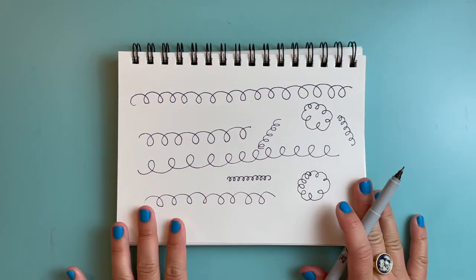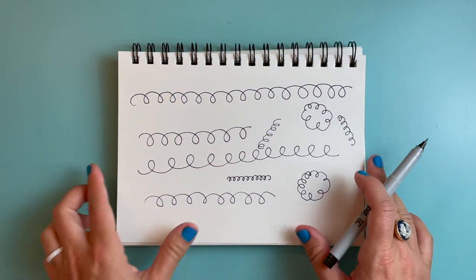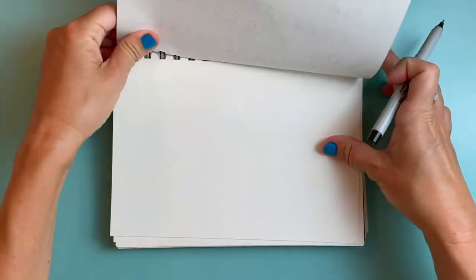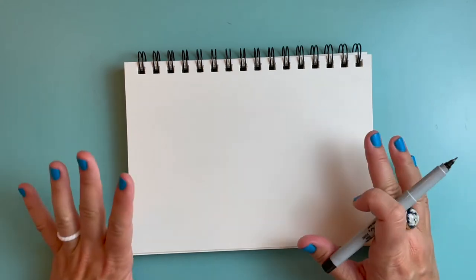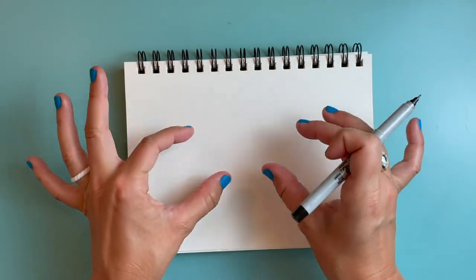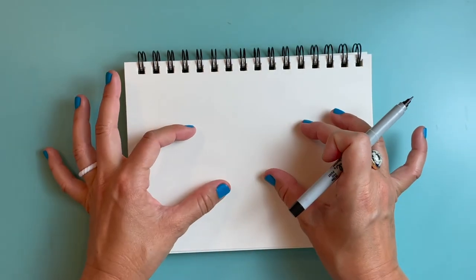Okay, so now that I've practiced drawing some curly lines, I'm going to flip to a new page and I'm going to draw two curly circles in the middle of my page and that's going to help form the body of my poodle.